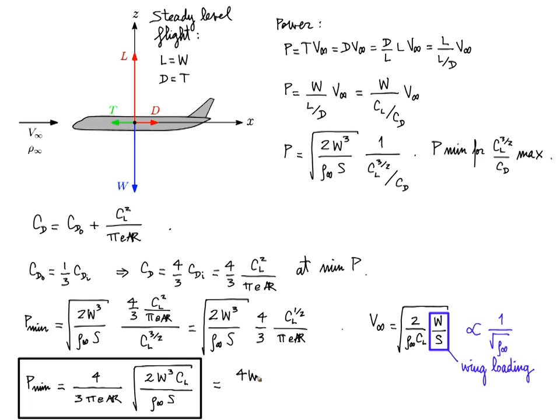Now let me also write the minimum power in another way. And here I want to point out two things again. One is that you see again the dependence on the square root of the wing loading.